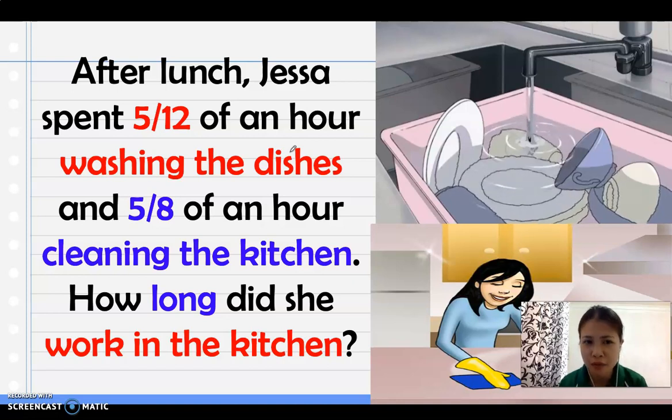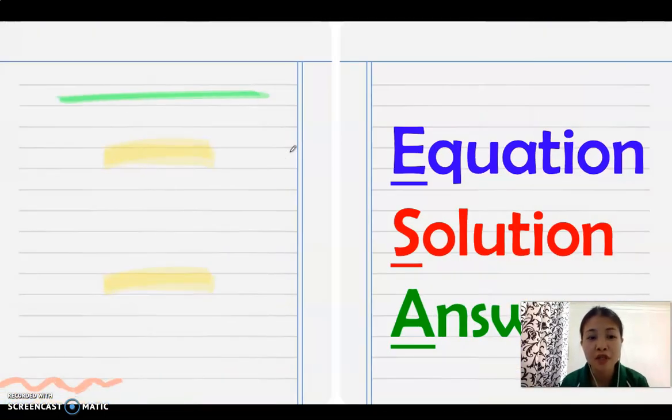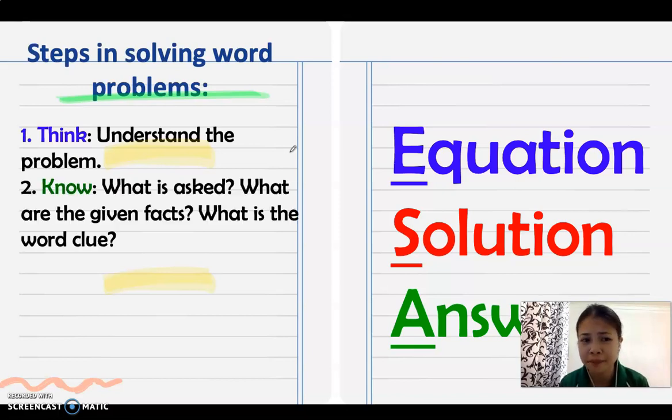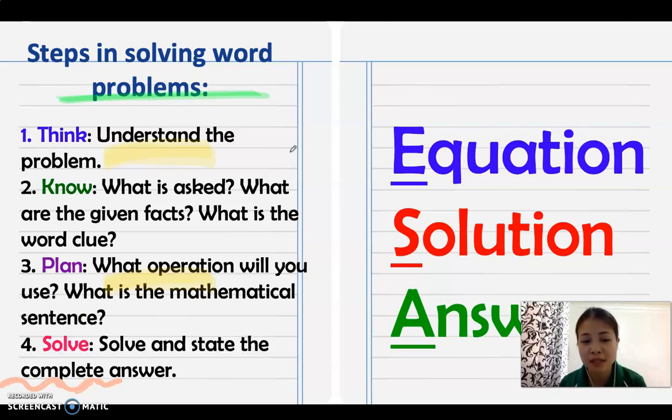Before solving this problem, we need to follow the steps. First, we need to understand what the problem is. Next, what is asked in the problem? What are the given facts and the word clue? What operation will you use? Then you solve and state it in a complete answer. You should not forget that you need to follow the form: equation first, then solve, then the complete answer.